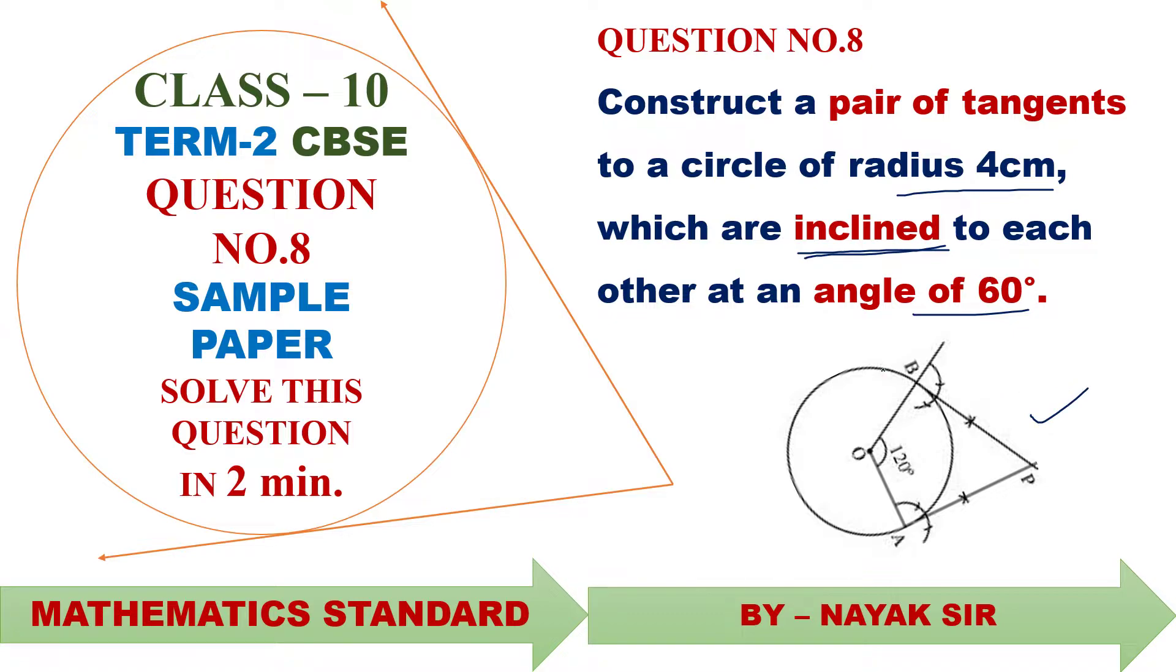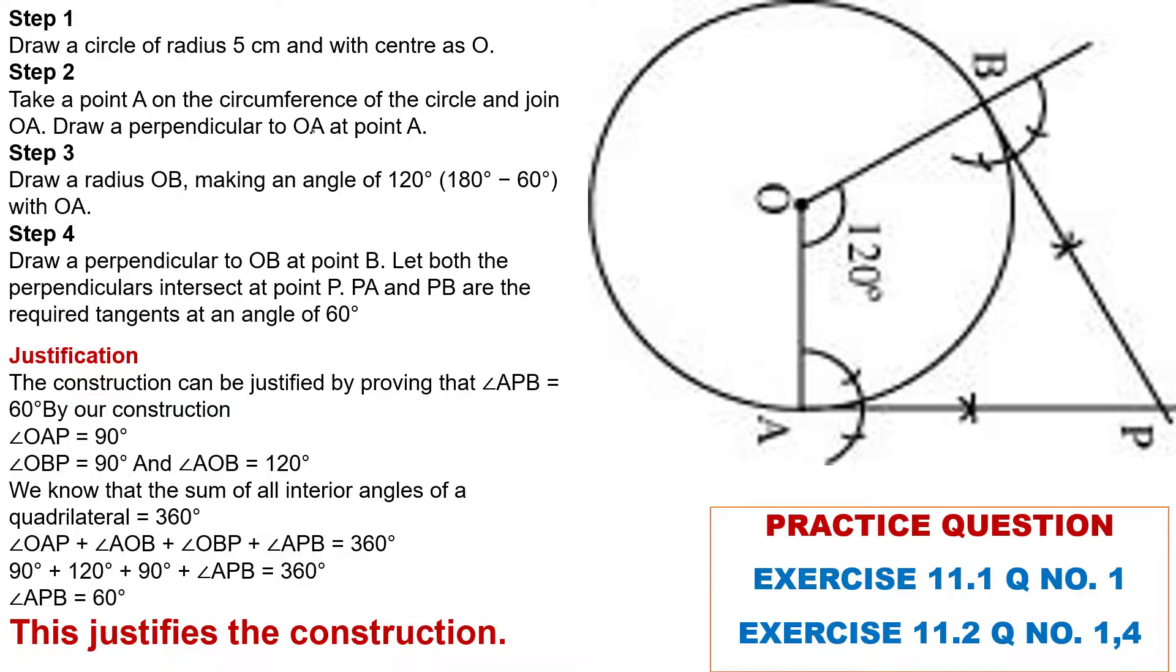But how can we construct it? Step 1: draw a circle with radius 5 cm and with center O. This is the center O, and radius 5 cm. First we draw a circle.